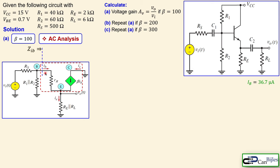Looking at the circuit, the impedance Z_IB is Rπ plus (beta + 1) times the parallel combination of RE and RL. It is important not to simply say Rπ plus RE in parallel with RL, because these are different branches fed by different currents — hence the (beta + 1) multiplication factor. We first calculate Rπ using the thermal voltage divided by the DC base current.